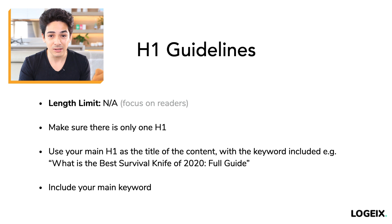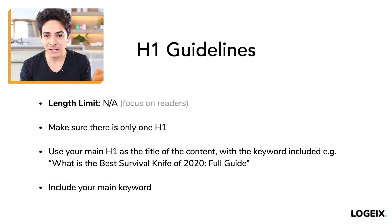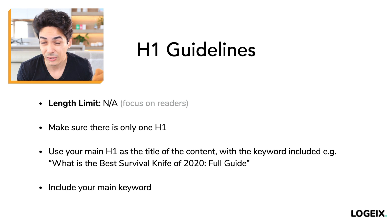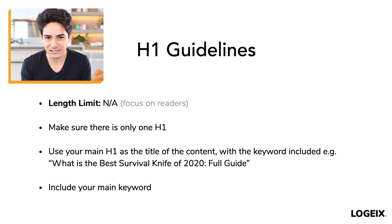From there, include the main keyword, and then do something a little bit extra so it's not just the bare keyword. For example, if the main keyword is 'best survival knife 2020,' write it in a way that reads well for humans: 'What is the best survival knife of 2020? Full guide.' Or just make it a question or a sentence rather than just 'best survival knife 2020.' Emphasize humans over search engines.